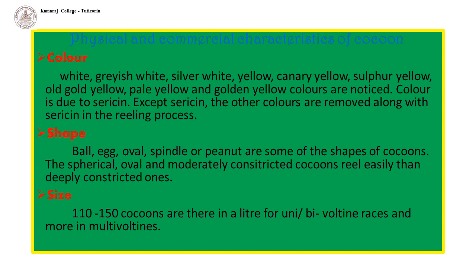Shape: Cocoons are found in ball shape, egg shape, oval shape, spindle, or peanut shapes. The spherical, oval, and moderately constricted cocoons reel more easily than deeply constricted ones.